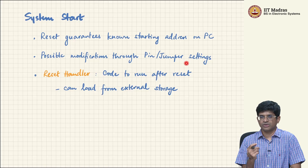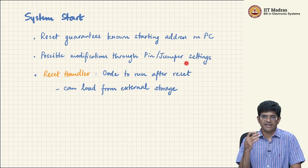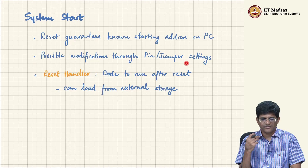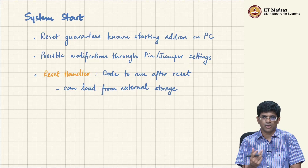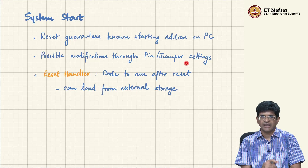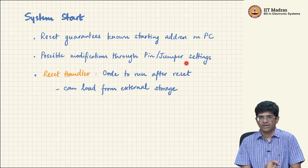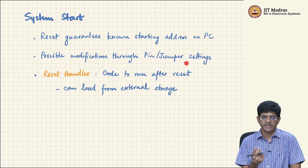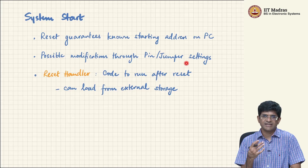We know that our flash memory in the system starts at some address — for example, 0x800. That address is a physical property of the processor and the system — the ARM processor itself tells you that flash is expected to be at this location and RAM is expected to start at another location. There is really nothing you can do to change that, which means the linker and loader have to use those addresses to get data into the system.